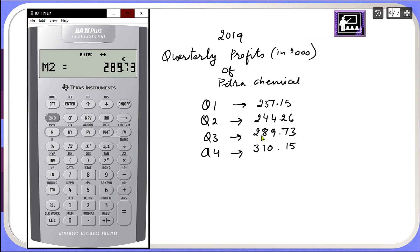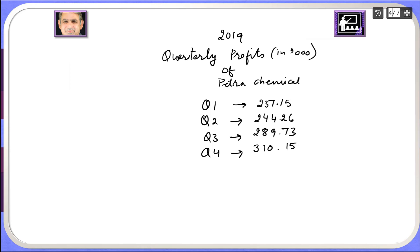And third quarter profit 289.73 gets stored in M2 and finally fourth quarter profit gets stored in M3.